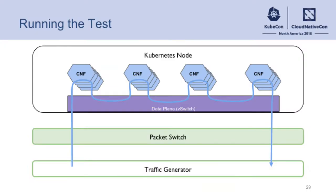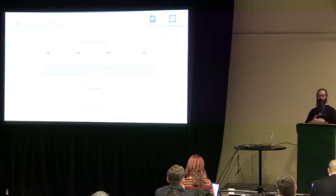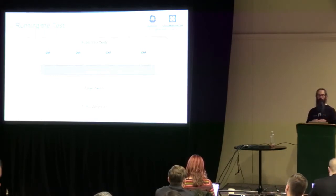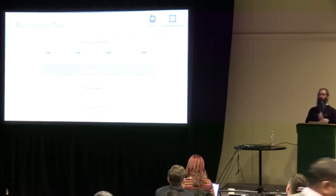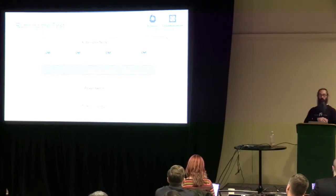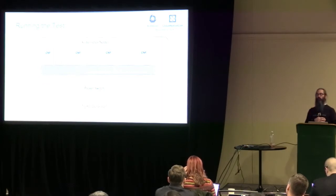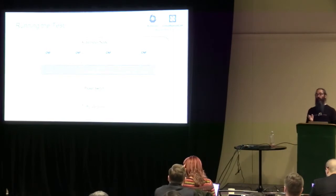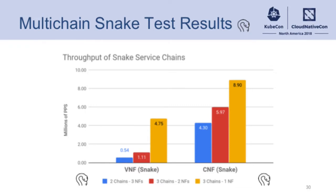Once you have the service chains set up, then it looks a little like this for running the test. The traffic generator, which is running NFV bench and then T-Rex to drive the packets, goes through the switch at Packet the provider, hits the worker node or compute node running those network functions, goes through all the chain, and loops back to the traffic generator, and then we can look at some of the results.